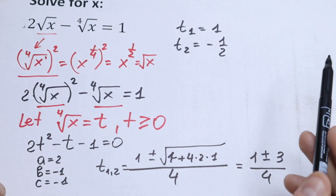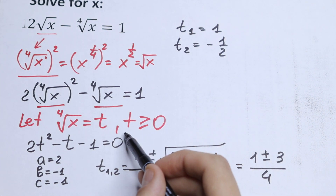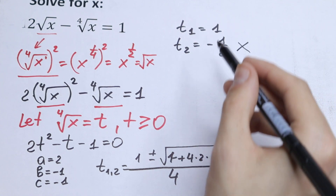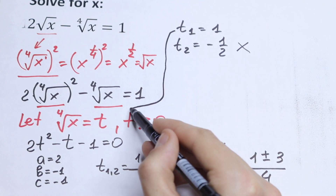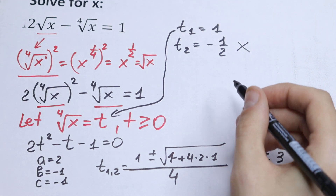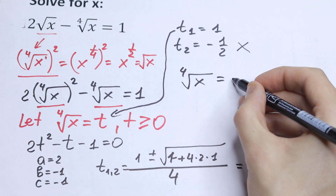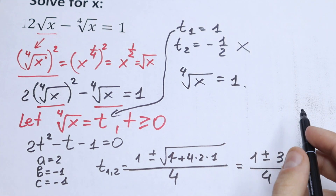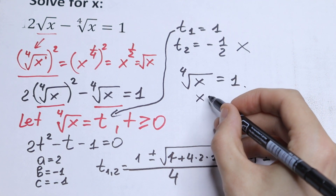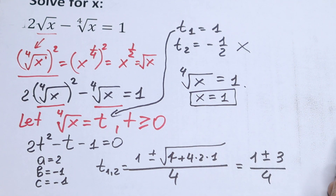We have two roots, t₁ and t₂. Since t must be greater than or equal to zero, t₂ equals minus one-half is not valid. We keep only t₁ equals 1. Going back to our substitution — the fourth root of x equals t equals 1 — we raise both sides to the fourth power and get x equals 1. That is our answer.